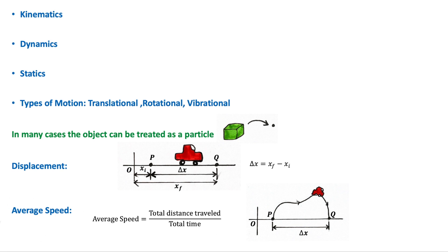We will now discuss average speed. Average speed equals the total distance traveled over total time, and its SI unit is meters per second. There is often a mix-up between speed and average speed. Both are scalar quantities, but speed is the magnitude of the velocity, defined in terms of displacement over time, rather than total distance over time like average speed. To calculate the average speed of the car, we divide the total path length by the total time taken between P and Q.